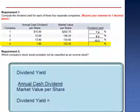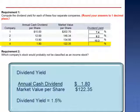And Company 4: the annual cash dividend per share of $1.80 divided by the market value per share of $122.35 is a dividend yield of only 1.5%.